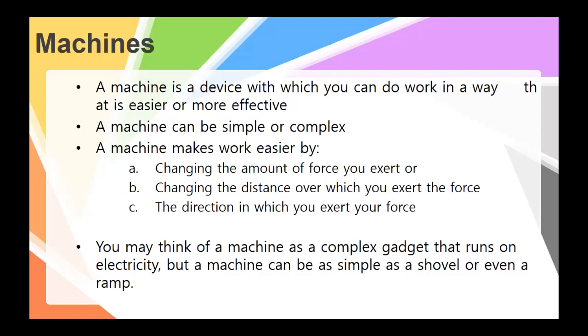One by changing the amount of force you exert, so if you're going to make more force over a longer distance or less force over a longer distance or more force over a shorter distance. Or B change the distance over which you exert the force because remember when we think about these relating force and distance to work. Or C the direction in which you exert the force. I have a great example this is the pulley we'll talk about. You can use an assist from gravity to pull down to get an object to go up.